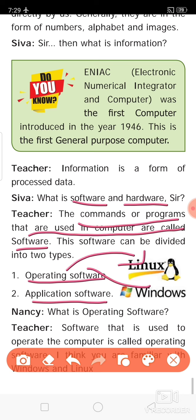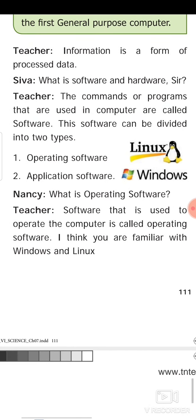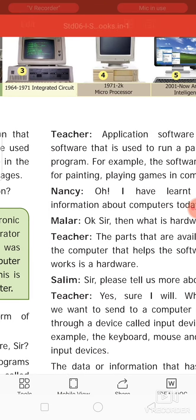Linux and Windows are examples of operating software. For a computer to run, it needs operating software like Linux or Windows. When you switch on the computer and log in, it initially shows Windows and its version. Software that is used to operate the computer is called operating software — examples are Windows and Linux.